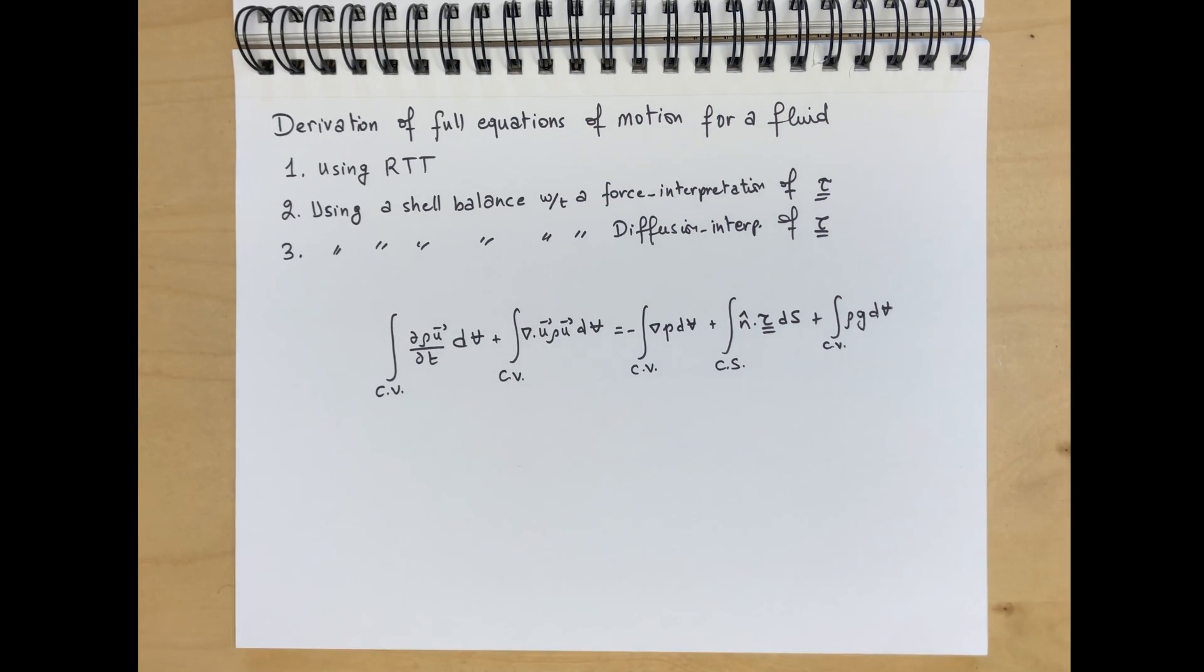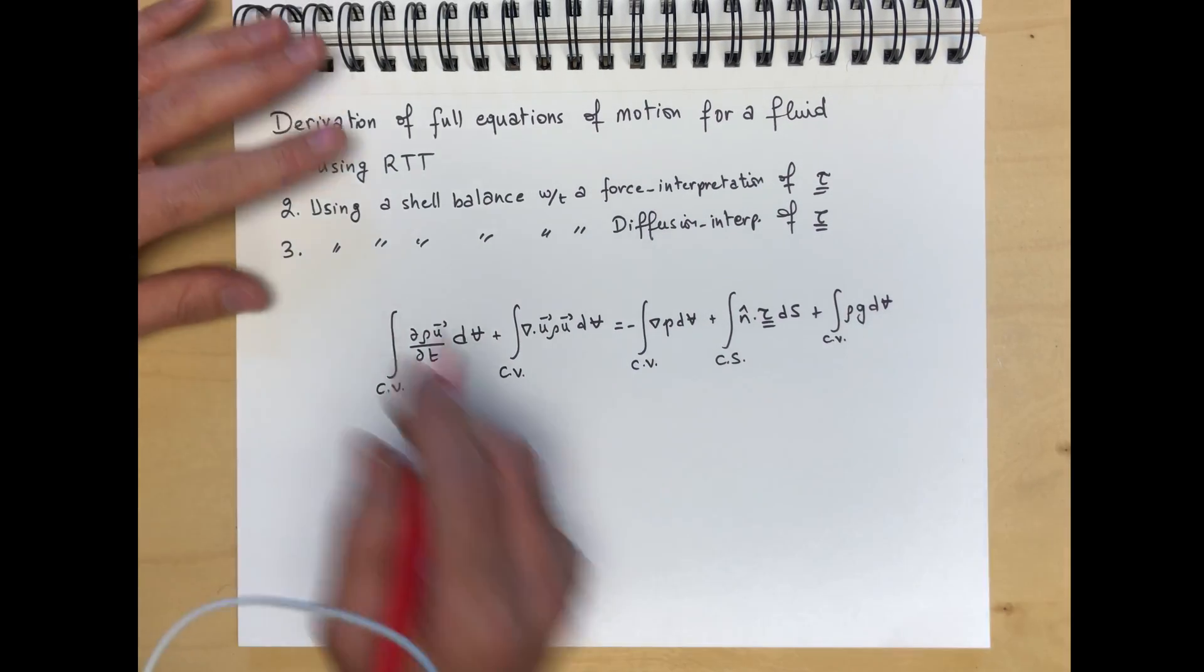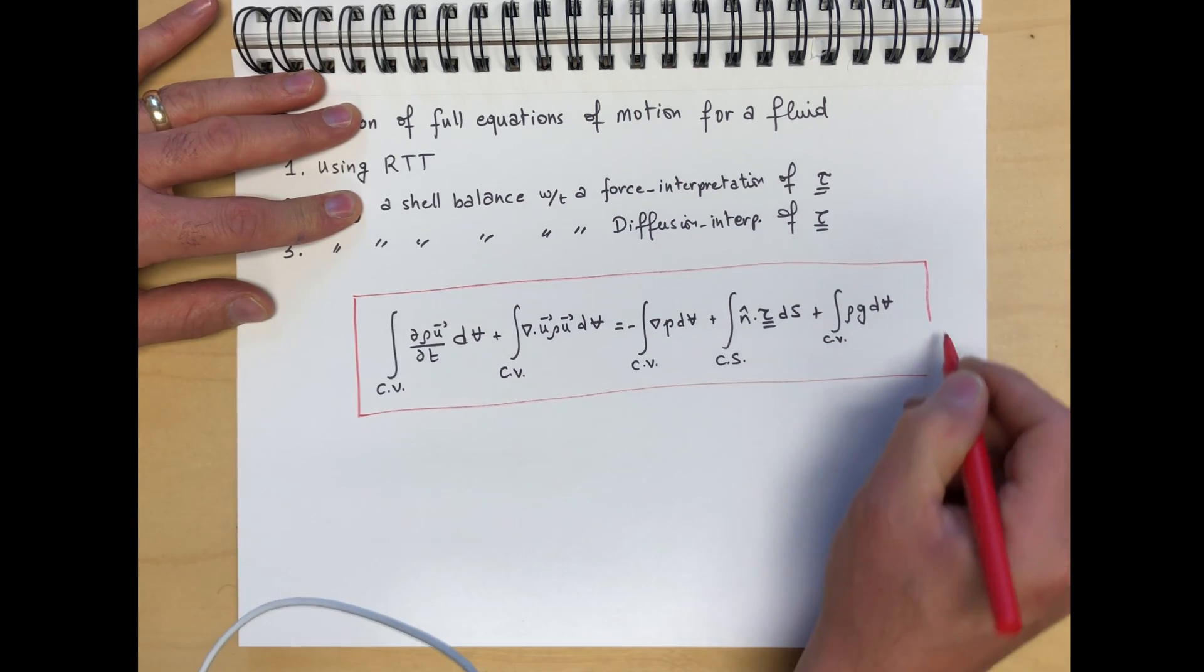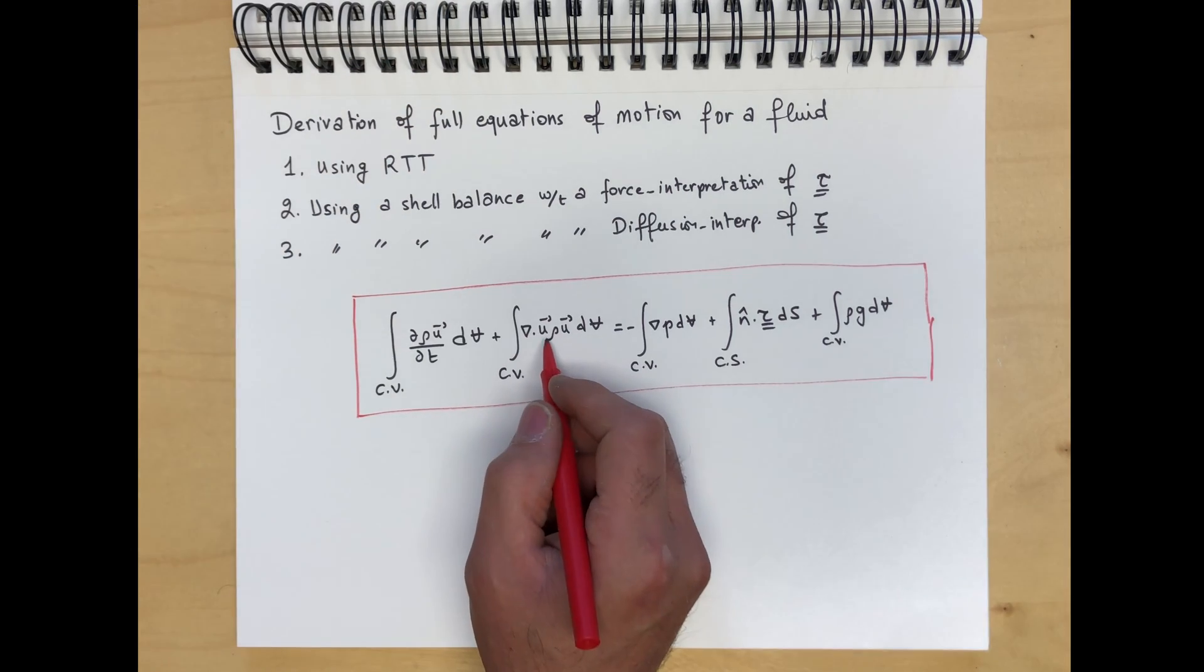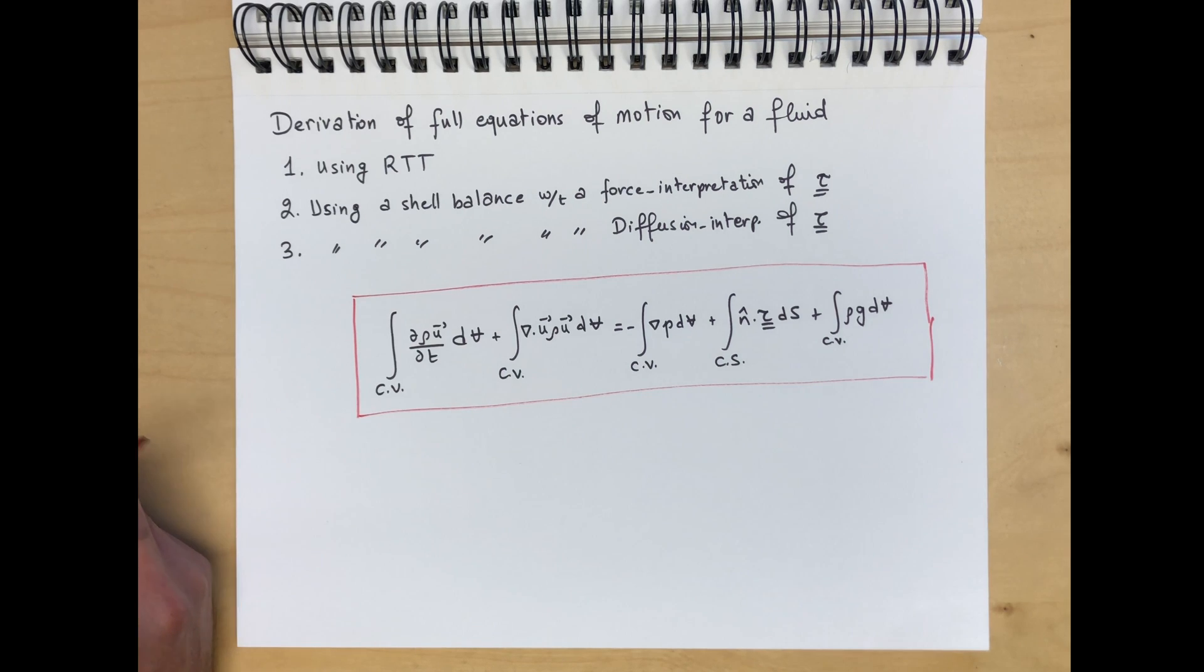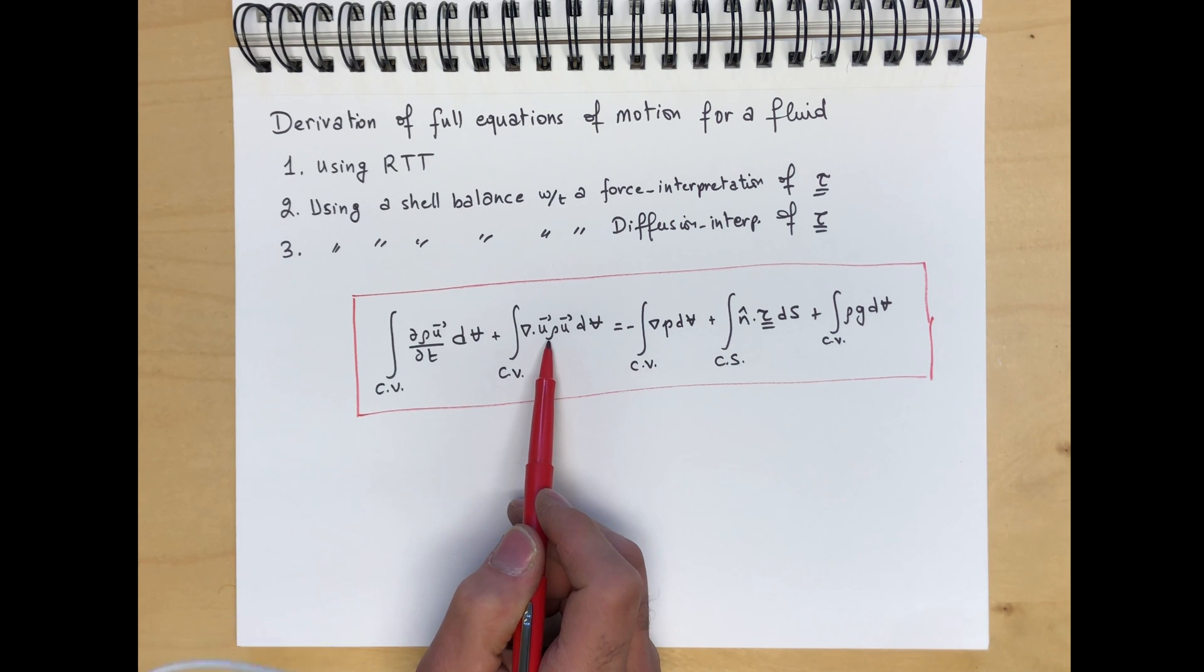Note a couple of things that I went ahead and did here. The first one is how I wrote the convective term. Rather than div rho u u, I wrote as div u rho u. This enforces the idea that the velocity field u is transporting momentum by advection.